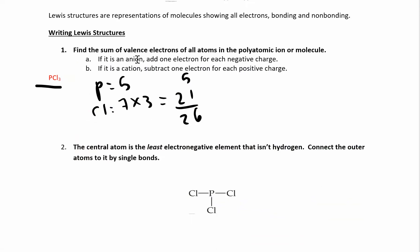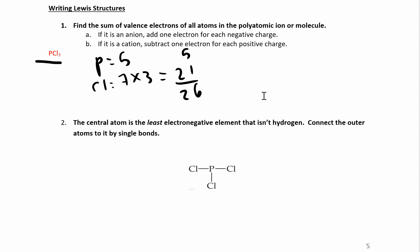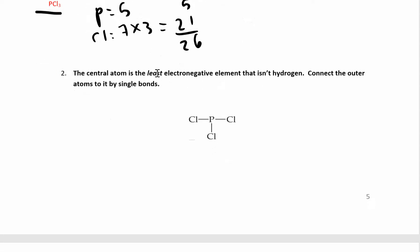Now if I had an ion — a cation or an anion — I'm going to have to add or subtract electrons depending on the charge. If it's an anion, that means it's negative, meaning it gained an electron, so I'll add an electron for every charge. If it's a cation, that means it's positive and I lost an electron, so I'll subtract from the total. It doesn't matter where those electrons came from. Now I have 26 electrons and I'm going to figure out where they go in PCl₃.